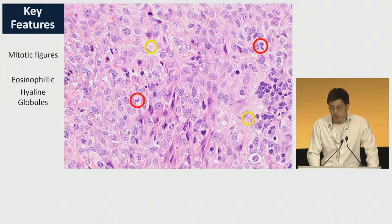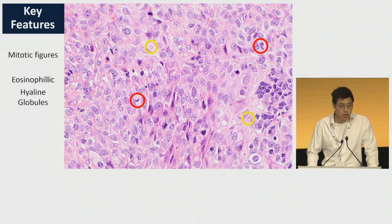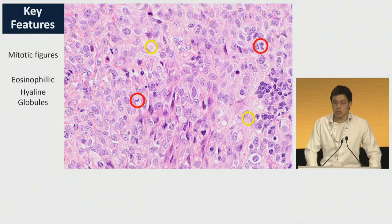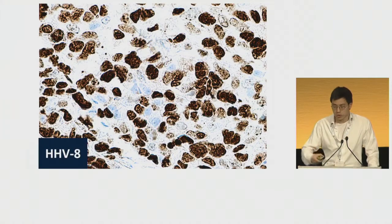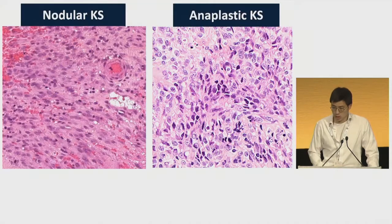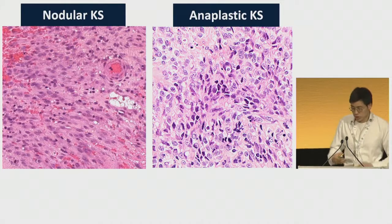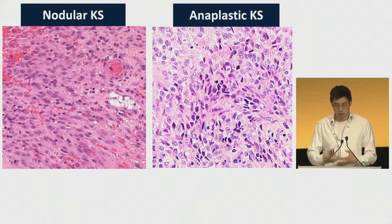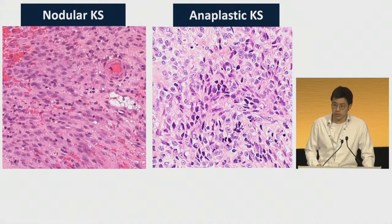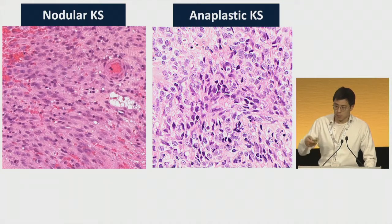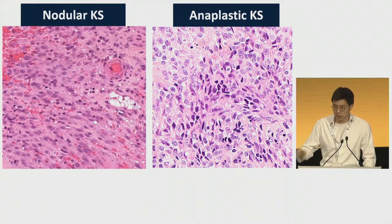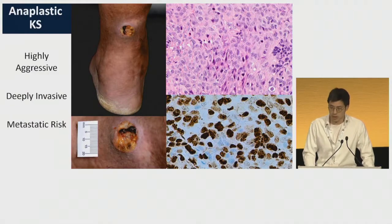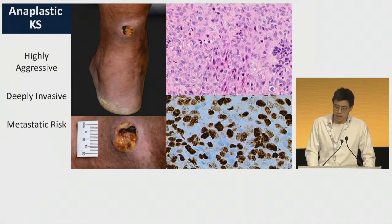We also see quite specific features of KS — the eosinophilic hyaline globules, which represent digested or partially digested erythrocytes and are quite specific in the literature to KS. HHV-8 confirmed positivity. Therefore, the diagnosis of anaplastic Kaposi sarcoma was made given the pleomorphism and atypical mitotic figures. Side by side with nodular KS, the differences of marked pleomorphism and atypia are clear — not present in nodular KS, which has more bland cells.